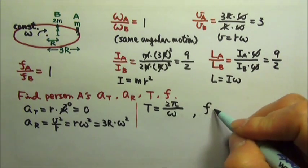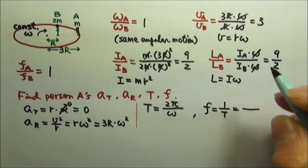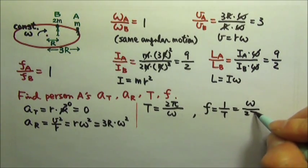And what is the frequency? Frequency is 1 over period. So it is the inverse of that, omega over 2 pi.